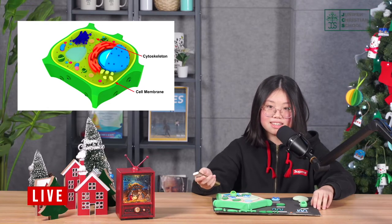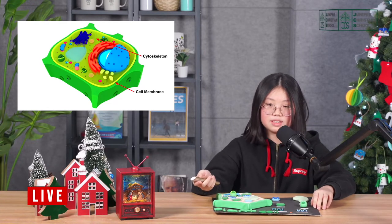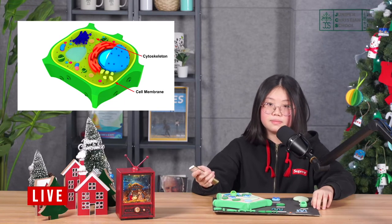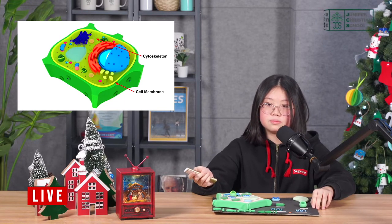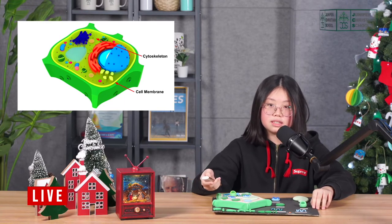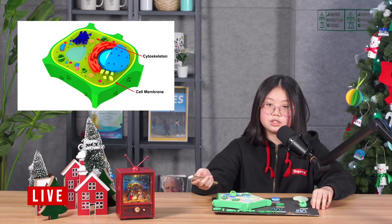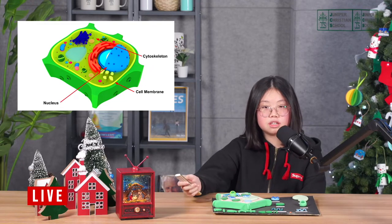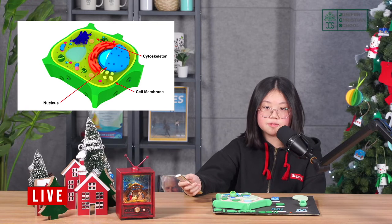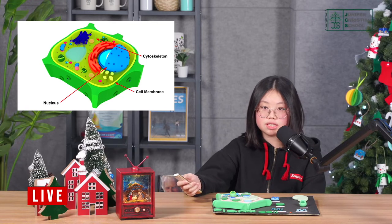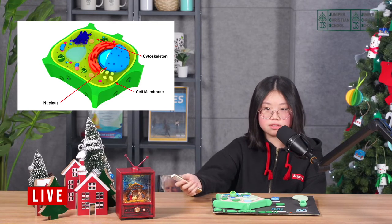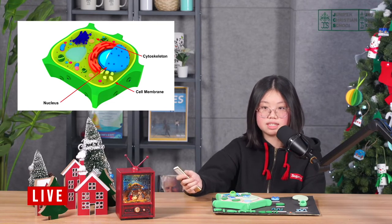Cytoskeleton is a network of protein filaments and the function is to support the cell and give the cell shape. Nucleus is the brain of the cell and it gives order to the cell. It contains genetic information which is called DNA.